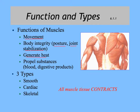Our muscles also help propel substances through the body. They help return blood to the heart through contractions of muscles surrounding the veins in your lower extremity. Smooth muscle is involved in pushing partially digested products through your digestive system. So these are the key functions of muscles.